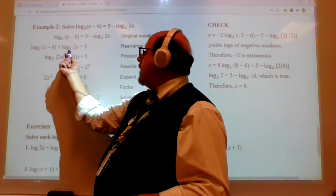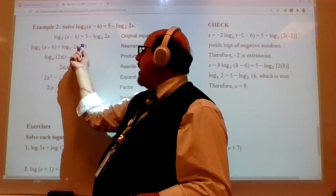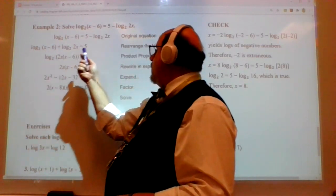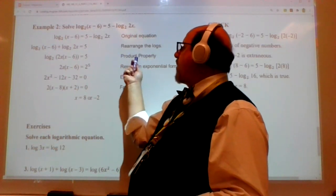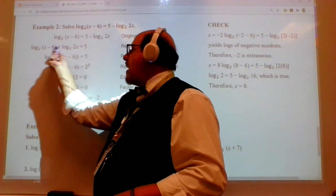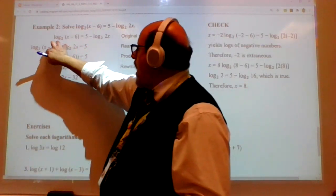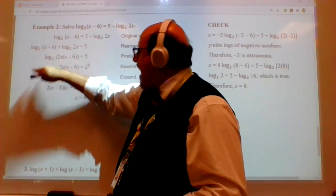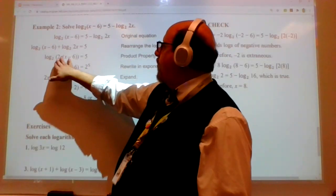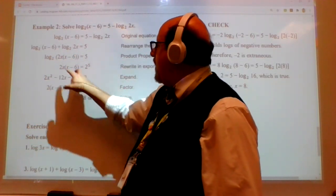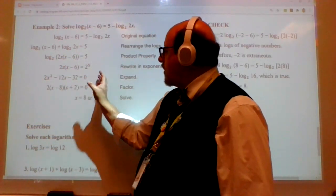So here we go. That's what they did. They put these two on the same side. I know that addition uses the product property, or the product property uses addition, so I go backward, right? Log base 2, 2x times (x minus 6). I combine those together. Now I'm in the proper form so that I can then say 2 to the 5th is equal to this 2x times (x minus 6).